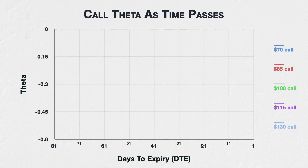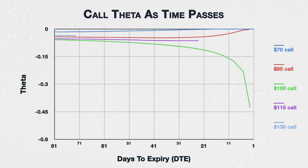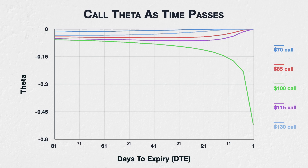Let's now look at 5 of the call options to further illustrate how their theta evolves and how their extrinsic value decays. This chart shows the theta of the $70, $85, $100, $115, and $130 call options. The x-axis now shows the days to expiry, so as we move from left to right on the chart, we can see how the theta changes for each of these options as time passes.